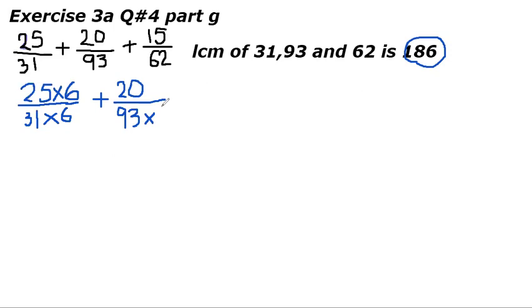That number is 2. 93 times 2 equals 186. We need to multiply 2 in the numerator also. It's a rule. When we multiply a number in the denominator, we have to multiply it in the numerator also.